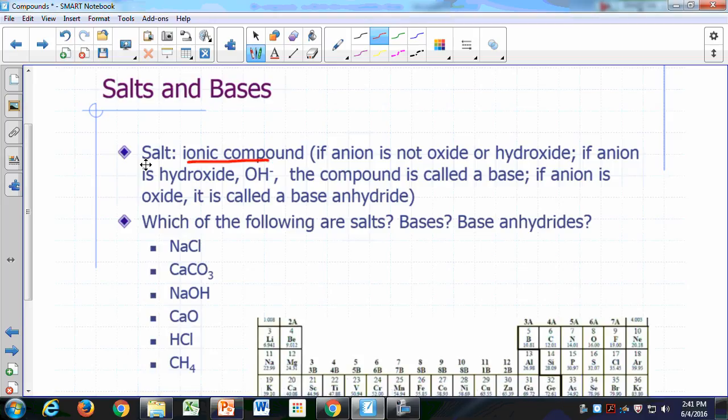An ionic compound is considered a salt if the negative ion, the anion, is not oxide, which is O-2, nor hydroxide.